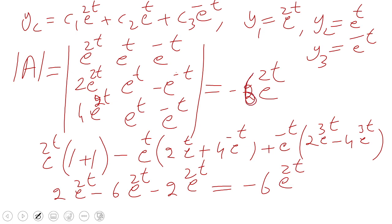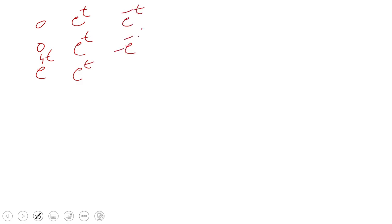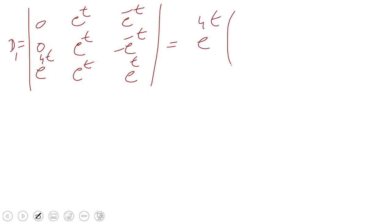Now we apply Cramer's rule. We replace the first column by [0, 0, f(t)] where f(t) = e^(4t), and the other columns remain the same. The determinant D1 gives e^(4t) times (-e^0 - e^0), which equals -2e^(4t).